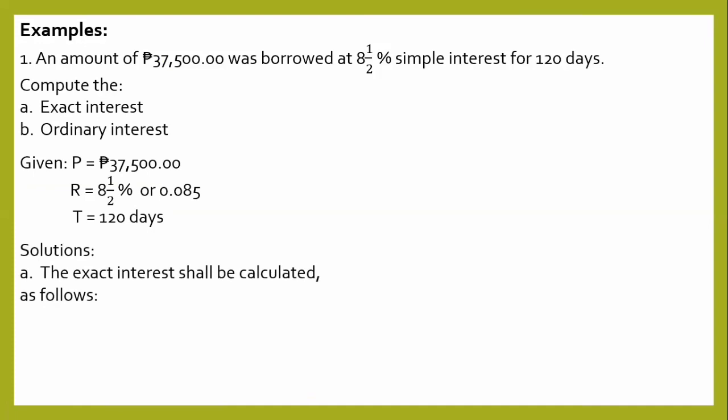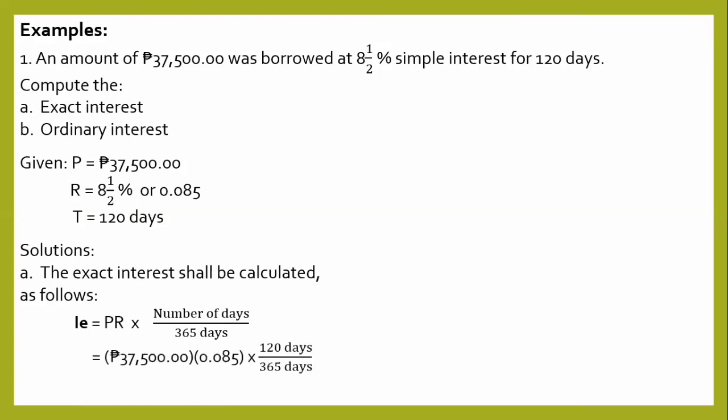For letter A, the exact interest is calculated using: IE is equal to P times R times the given number of days over 365. Substituting: 37,500 times 0.085 times 120, divided by 365. The exact interest IE is equal to 1,047 pesos and 95 centavos.